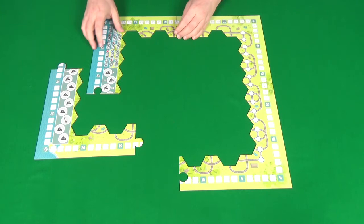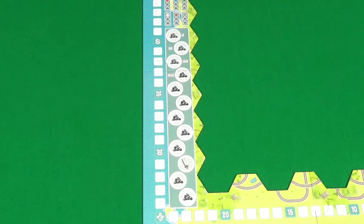You'll start setting up the game by clipping the main game board together like so. Then on the turn track here, find the whistle space and place one whistle token per player. Then find the coal space for the number of players you have, which is five, four, three, or two.